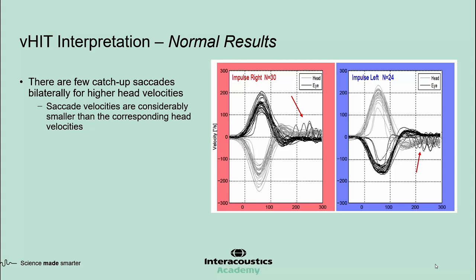Here is a borderline case with a few catch-up saccades bilaterally, especially for high-velocity head impulses. The saccade velocities are much smaller compared to head velocity, so this most likely represents a normal VHIT. If saccade amplitudes were higher, one may consider calling these abnormal even if VOR gains were not below 0.8 — in that case, the result might signify a mild bilateral lesion.